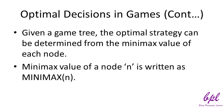Given a game tree, the optimal strategy can be determined from the minimax value of each node. We write the minimax value as minimax(n). The minimax value of a node is the utility for max of being in the corresponding state, assuming that both players play optimally from there to the end of the game. The minimax value of a terminal state is just its utility. Given a choice, max prefers to move to the state of maximum value, whereas min prefers the state of minimum value.